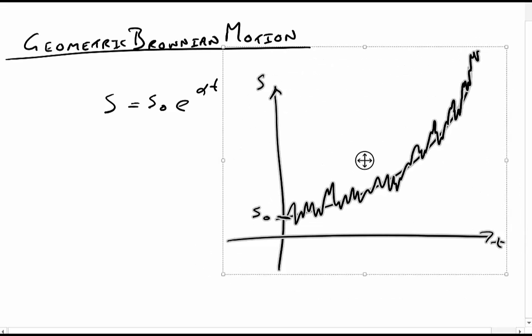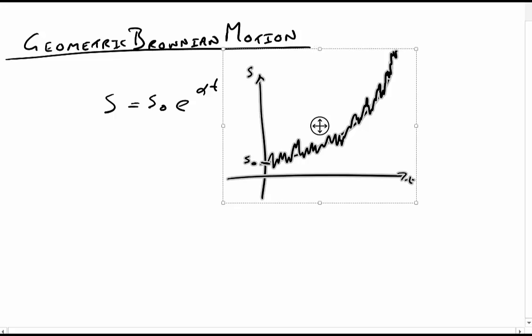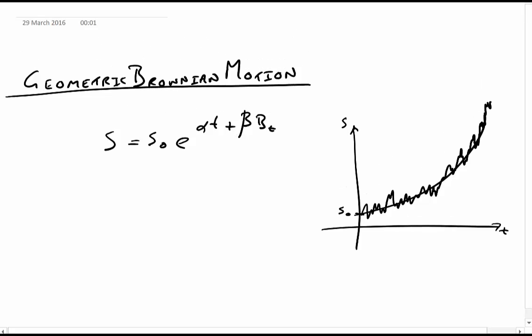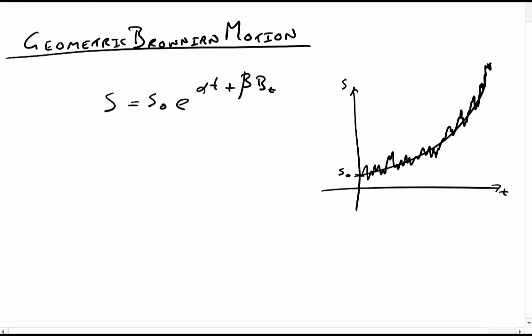We're going to have to take into account that Brownian motion, and we do so with an extra term — Brownian motion times some constant, effectively. That constant is known as beta. It's very difficult to measure what beta is, but it's very, very important. In fact, whole industries in finance are dedicated to measuring what this value of beta is.